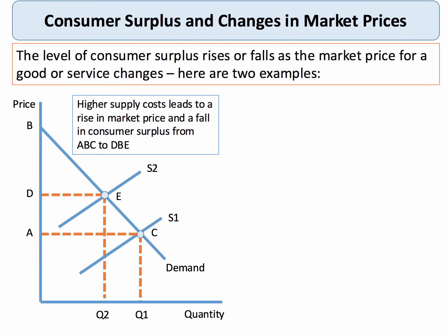So what happens to consumer surplus when there's a change in the market price? In our first example we see an inward shift of the supply curve from S1 to S2, leading to an increase in price from A to D and a contraction in quantity demanded from Q1 to Q2. The original consumer surplus was area ABC, but after the price increase, because quantity has contracted to Q2, the new area of consumer surplus is only BDE. So higher supply costs leading to increased prices for consumers will lead to a fall in consumer surplus.